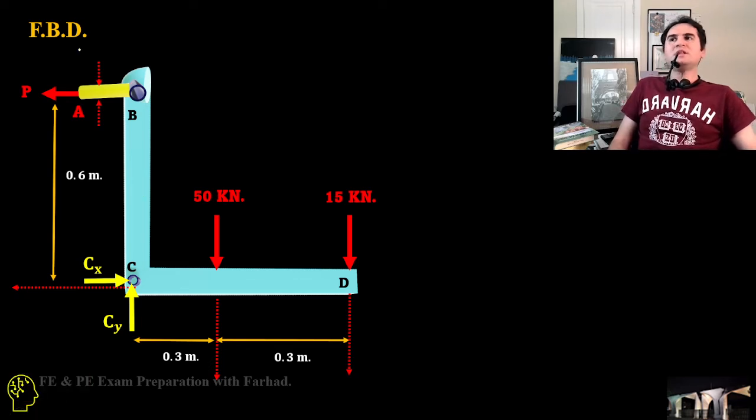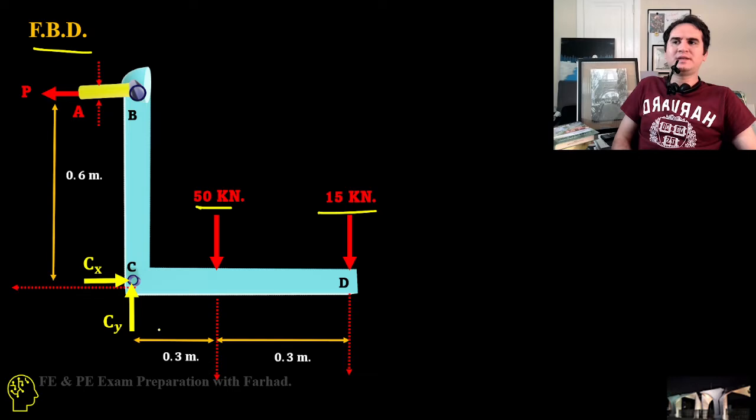The very first step in such a problem is drawing a free body diagram. If we draw a free body diagram and release the structure from support and see the effect of forces, we have C_y and C_x. There is a P applied at the control rod over there, and there are two forces of 15 and 15 which are applied at two distances based on our problem statement.